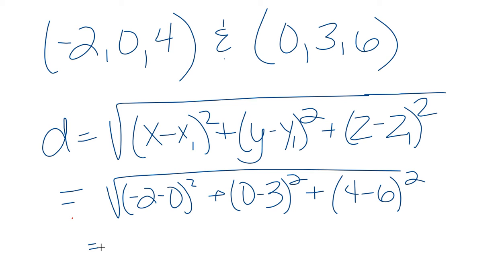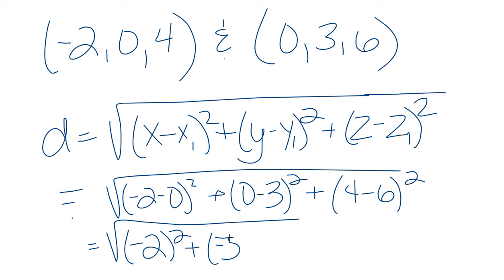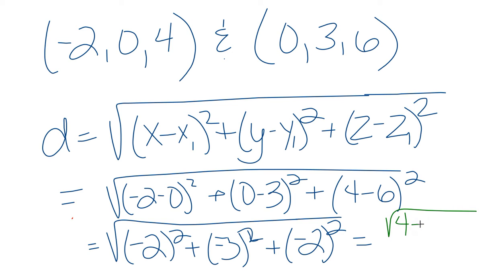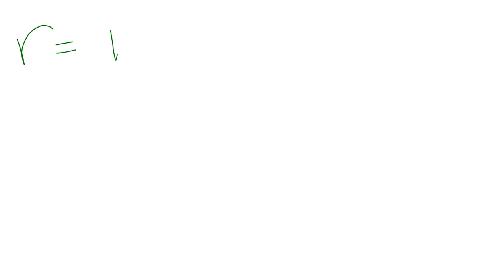Let's clean it up: negative two squared plus negative three squared plus negative two squared. It doesn't matter that they're negative because we're going to square them and get positives. Negative two squared is four, negative three squared is nine, and negative two squared is four again. So we get the square root of four plus nine plus four, which is the square root of 17.